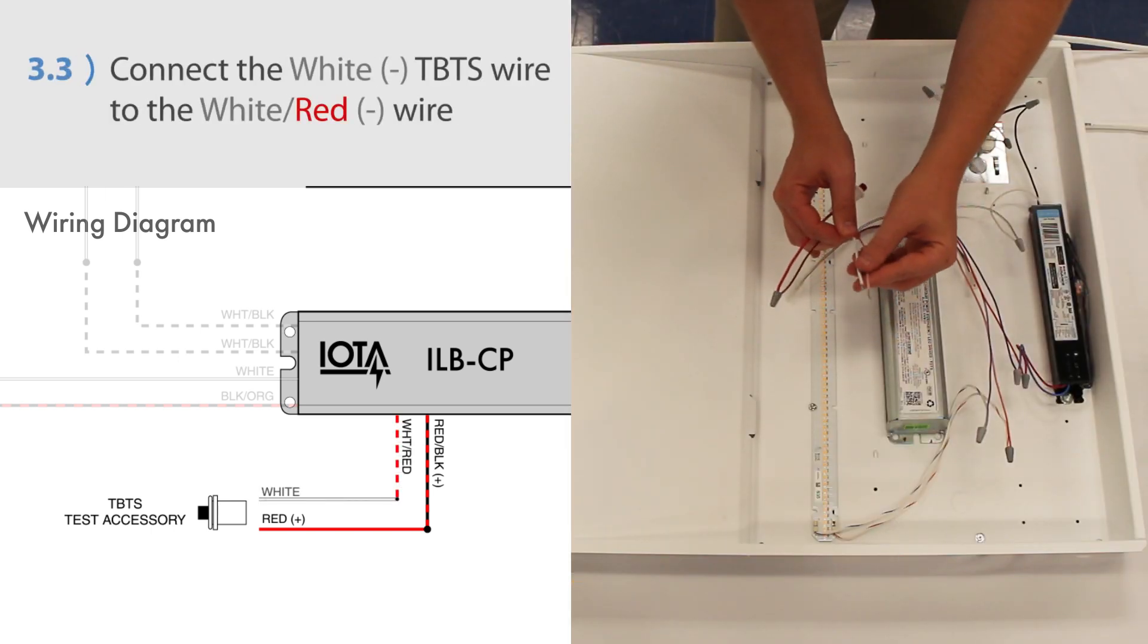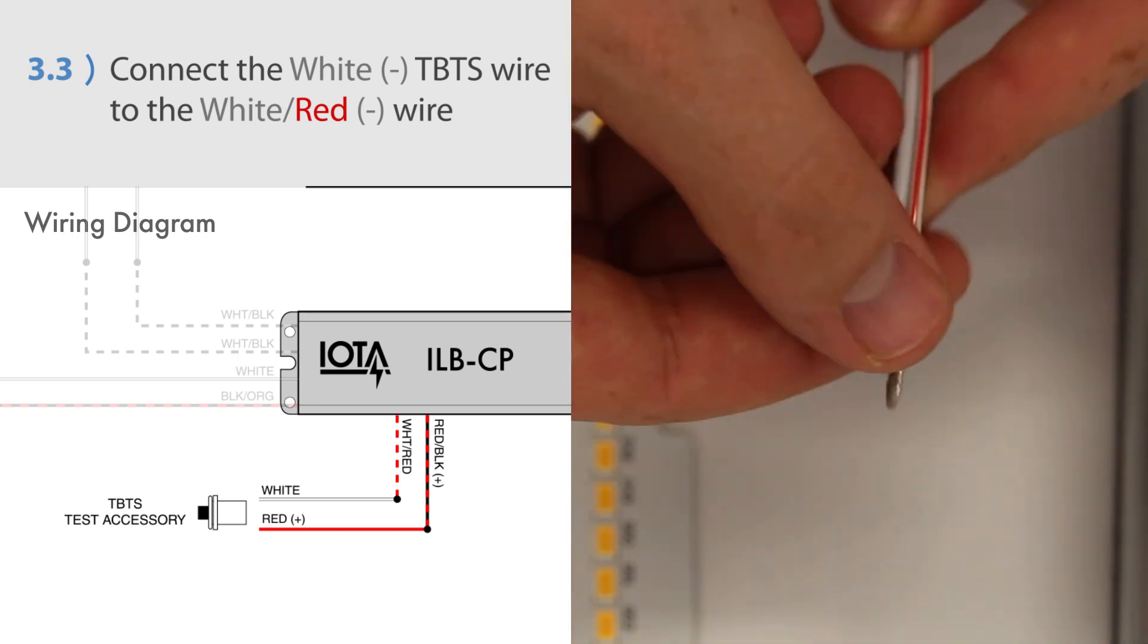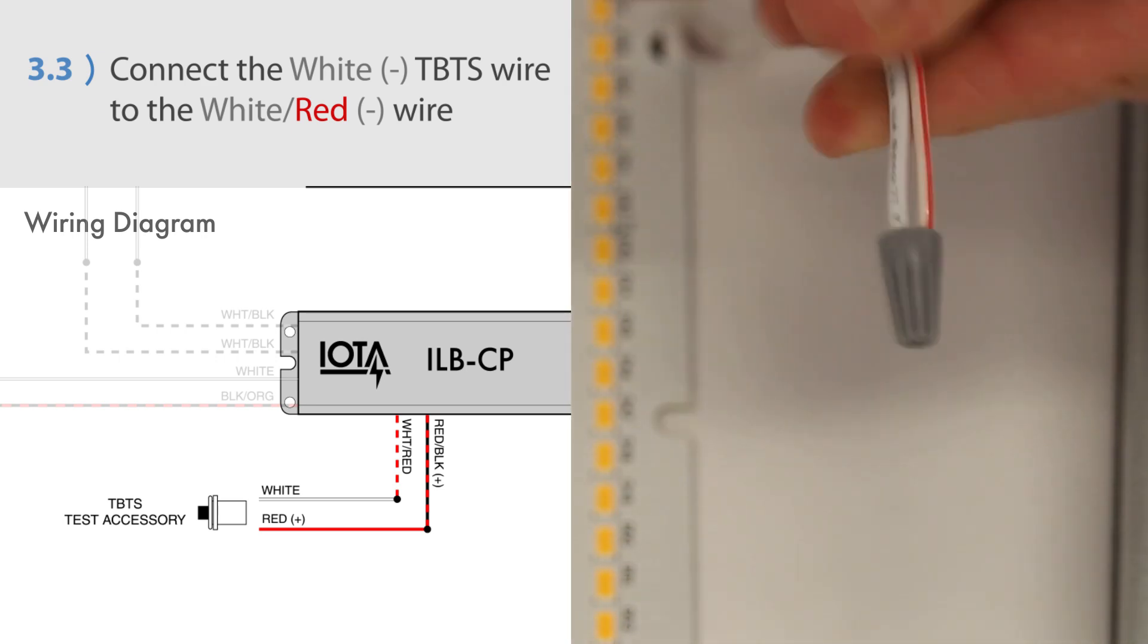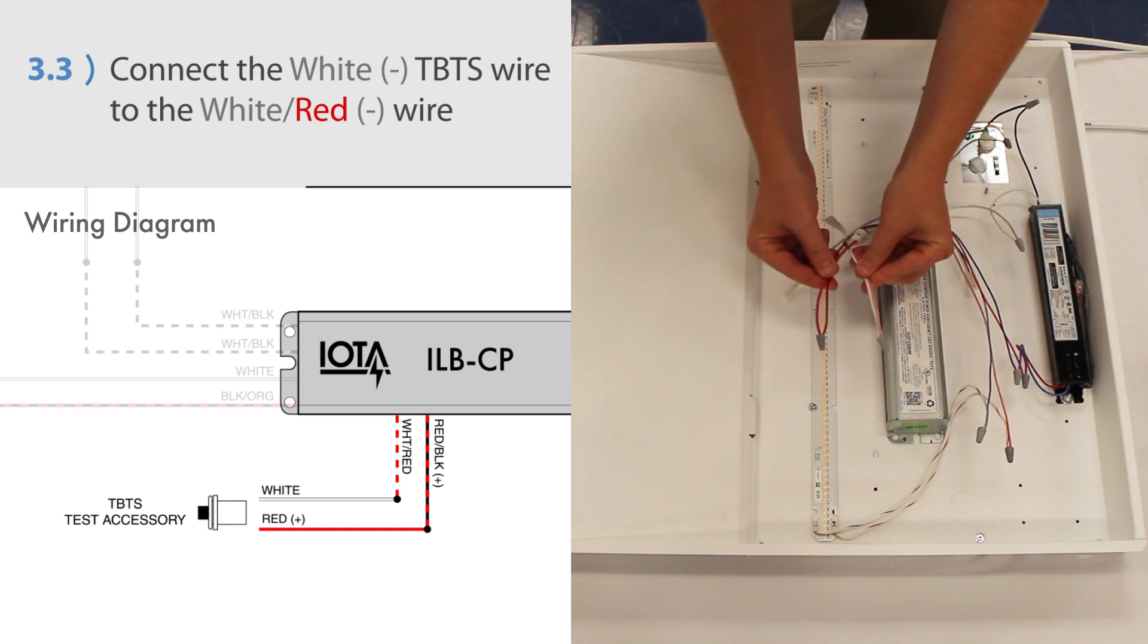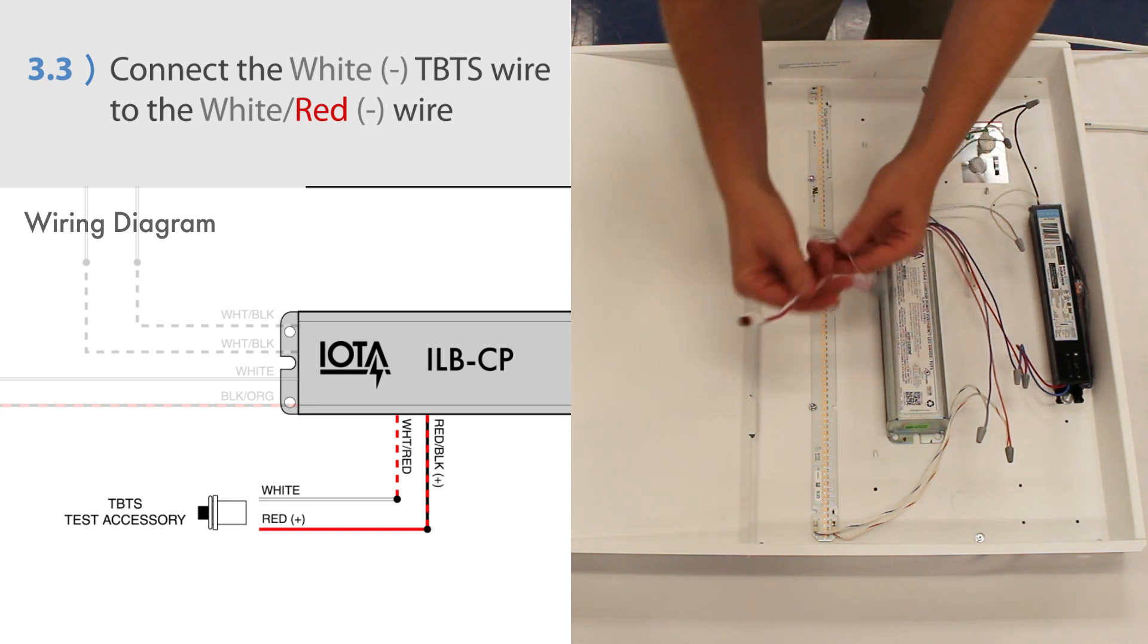Then connect the white negative wire from the TBTS to the ILB-CP's white-red negative wire. Note, always use the TBTS test button provided with your unit to ensure proper operation.